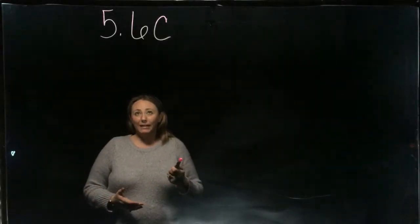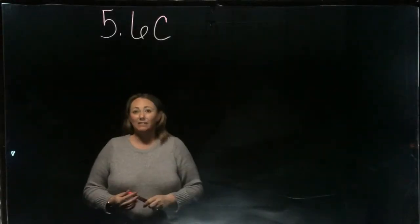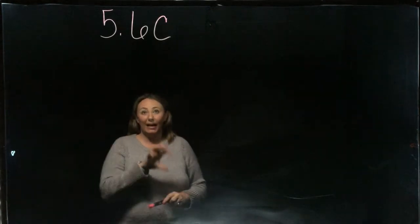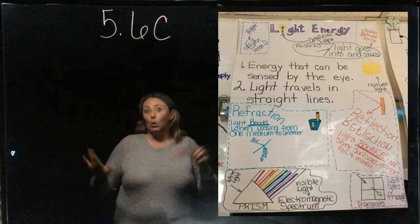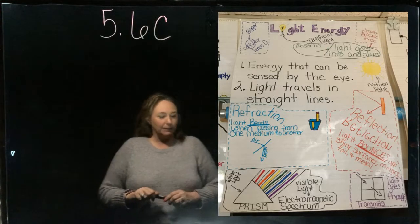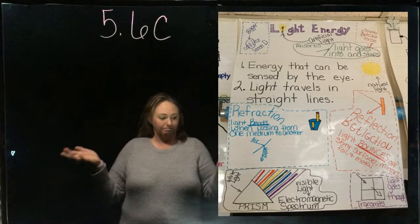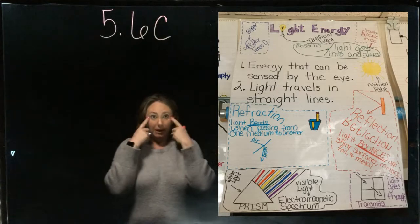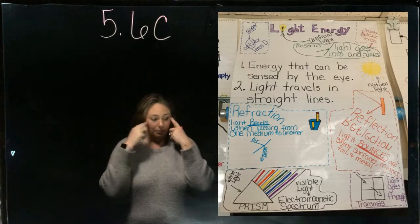Okay, our next TEK for today is 5.6C, and 5.6C is just light energy. It has its own TEK that's very special. So light energy is energy that can be sensed with the eye. Light travels in straight lines.